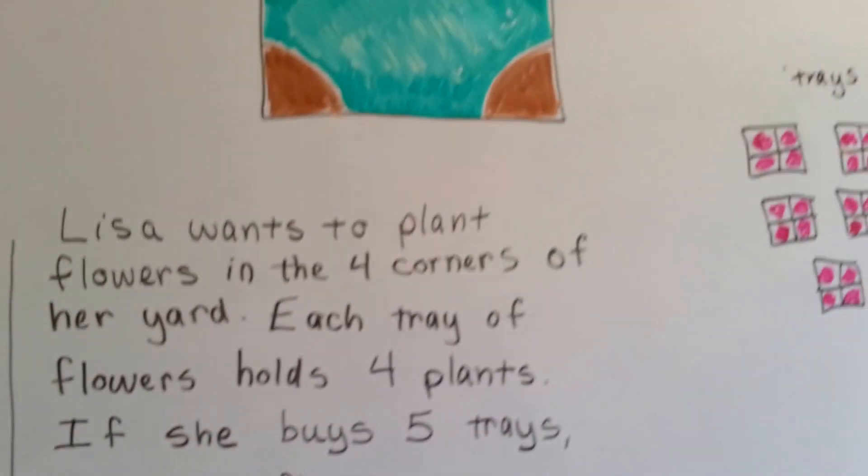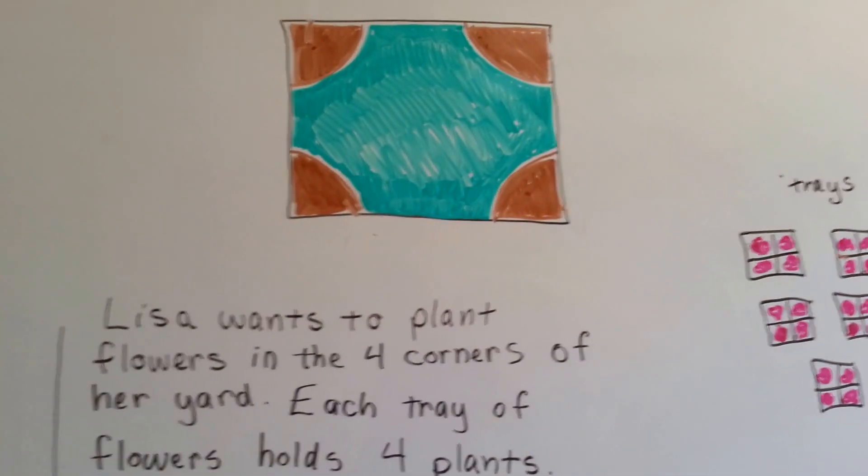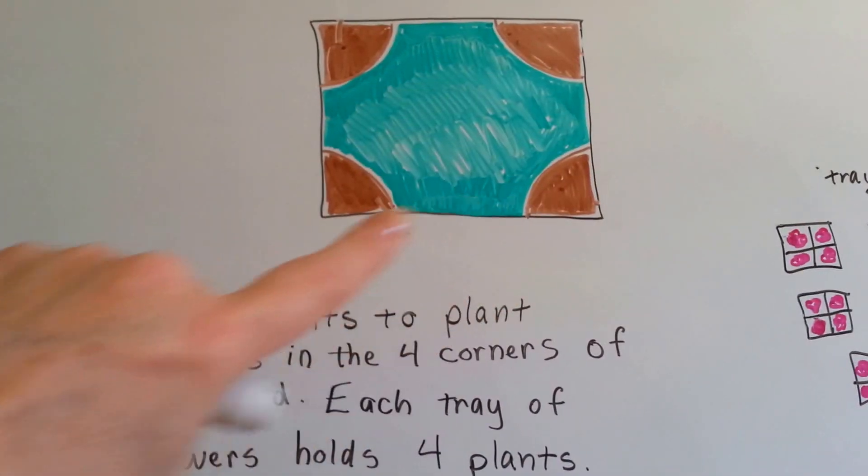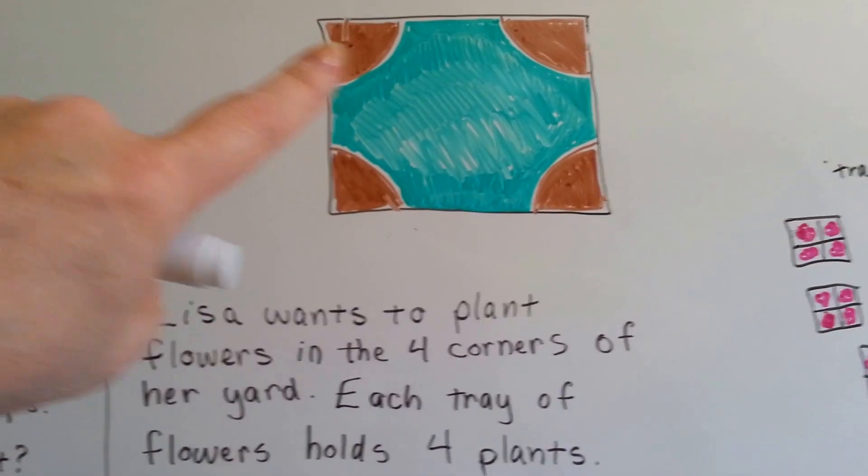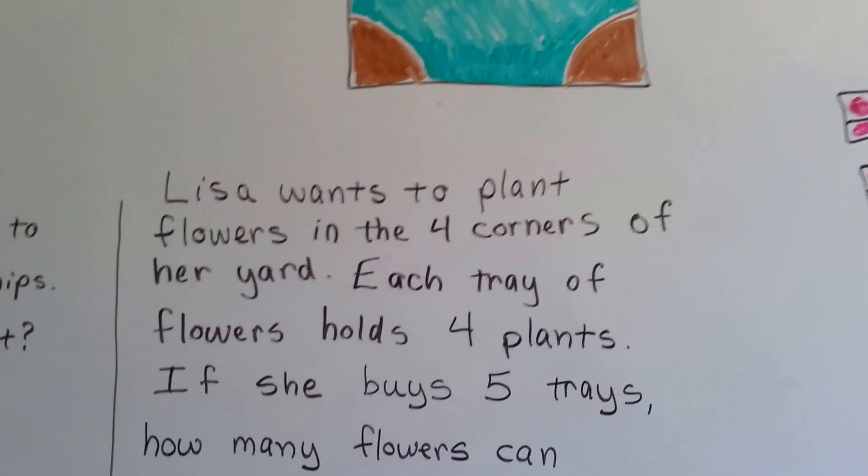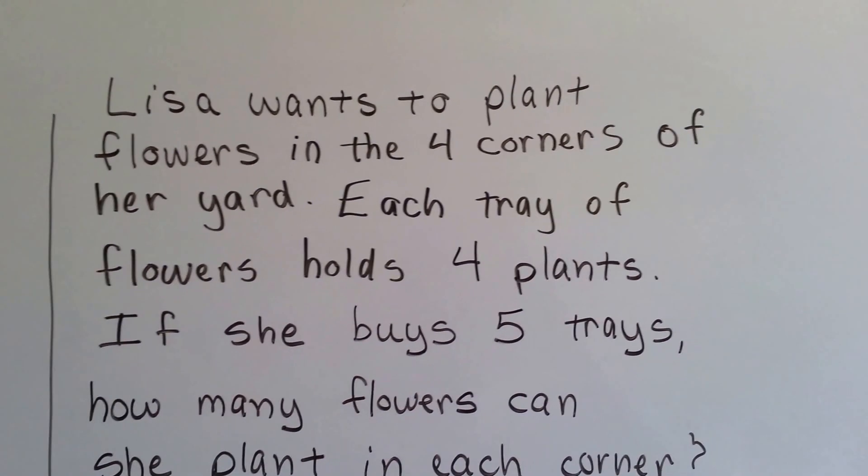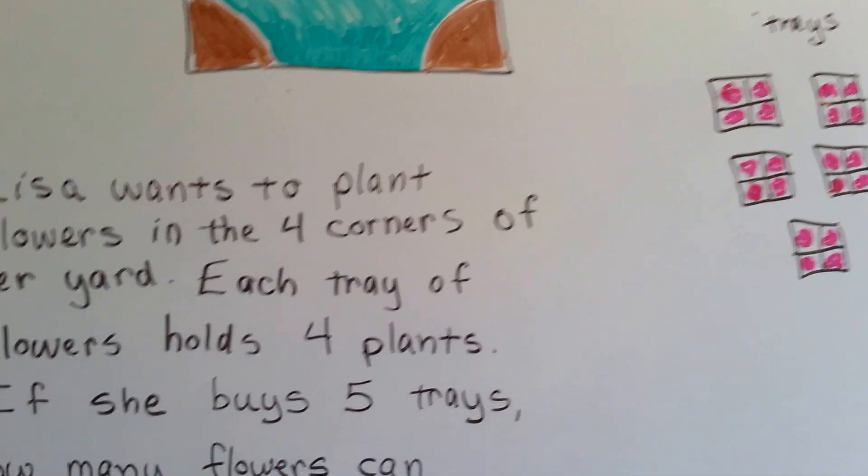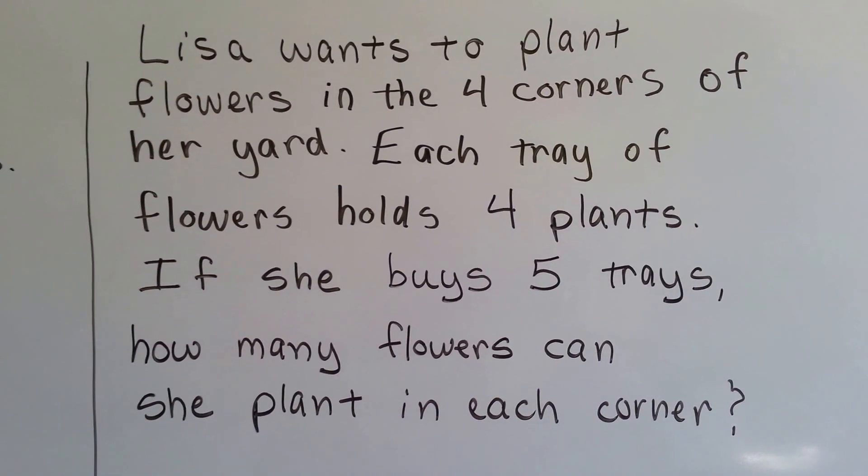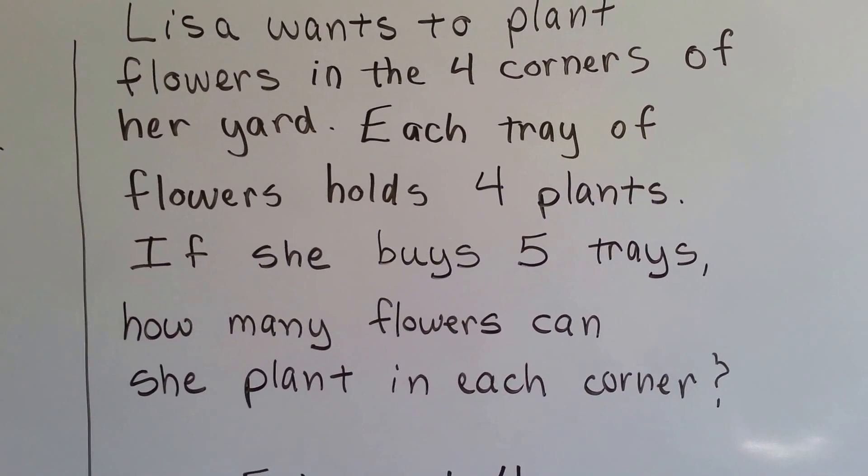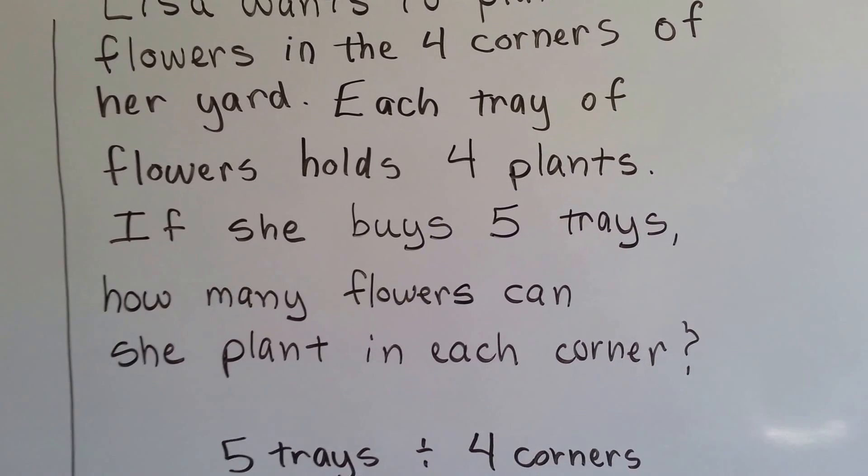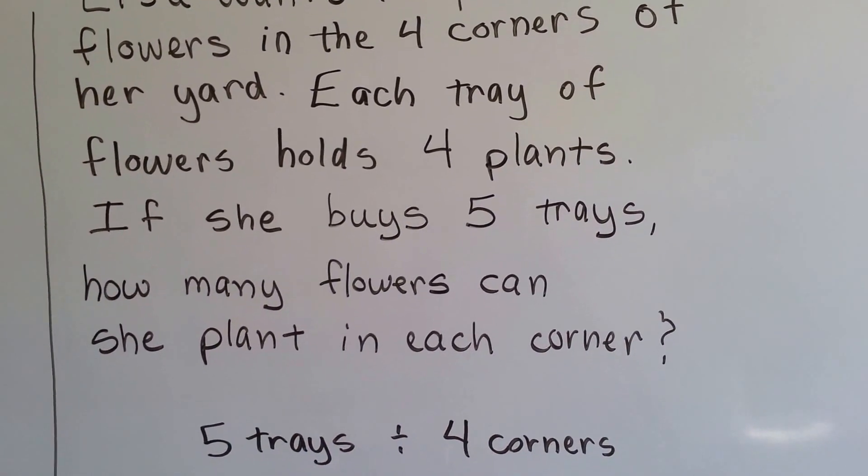Let's try a little different one here. This is Lisa's backyard. And she dug a garden for soil to plant flowers in each corner. She wants to plant flowers in each of the four corners of her yard. She bought five trays of flowers and each tray holds four plants. She bought five trays, so how many flowers can she plant in each corner?